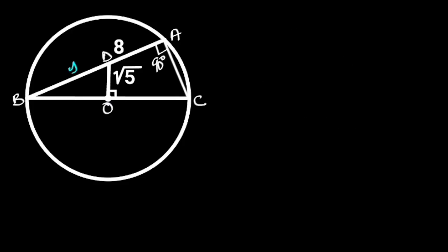Next, let BD = y and the radius of the circle be x. To find the radius of the circle, let's focus on triangle BDO. Since line DO is perpendicular to the diameter, triangle BDO is a right triangle. If we call this angle alpha, then the remaining angle of this triangle will be 90 degrees minus alpha. Reason: the sum of angles in a triangle is 180 degrees.